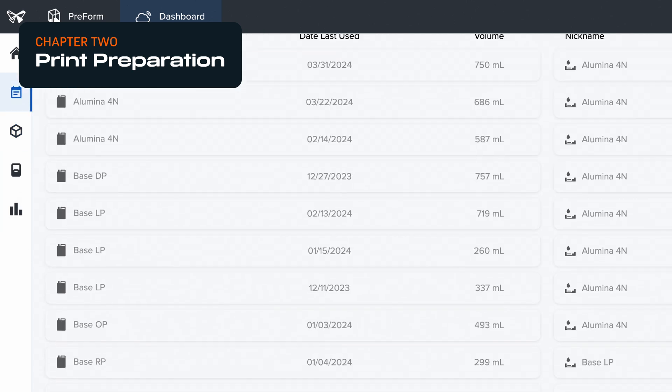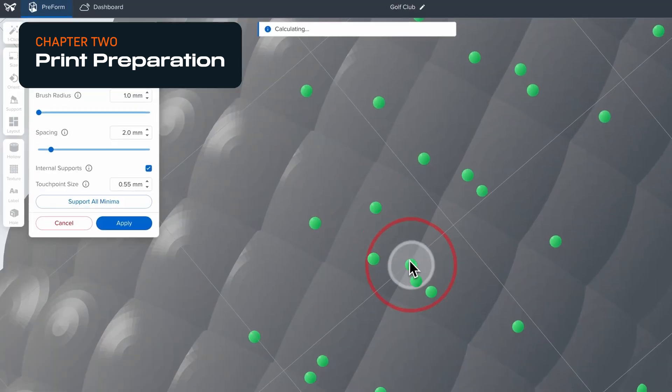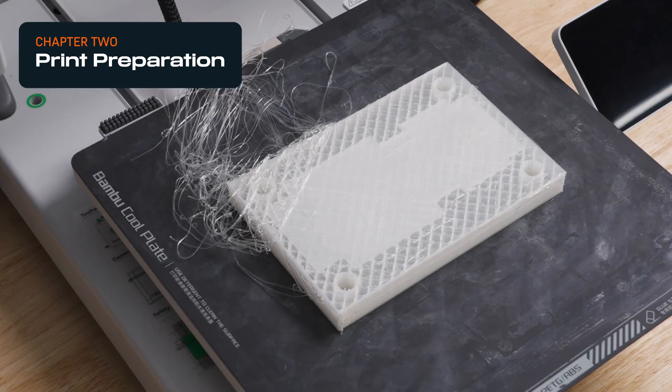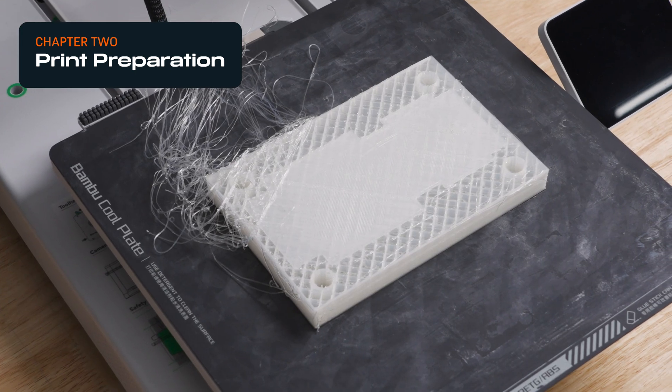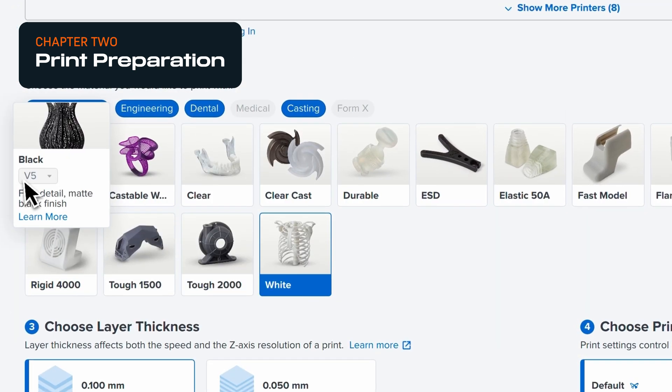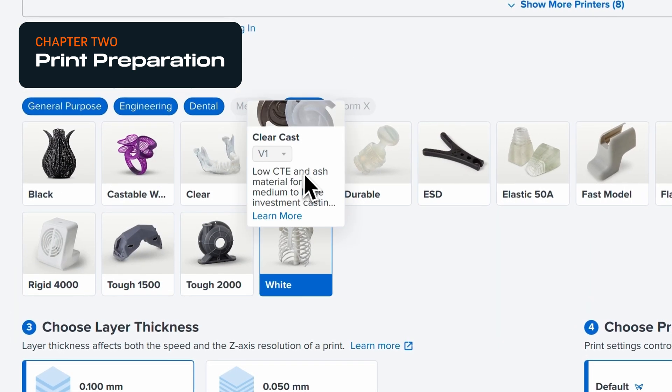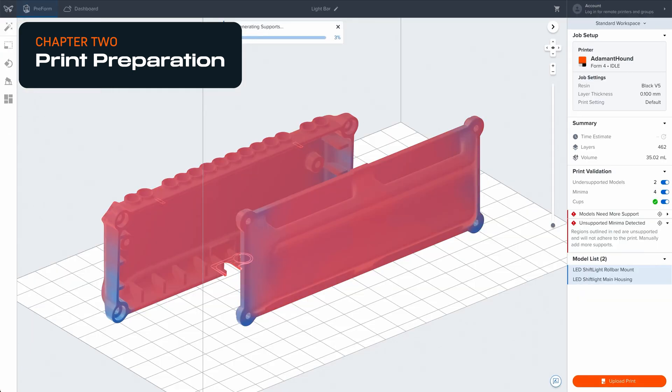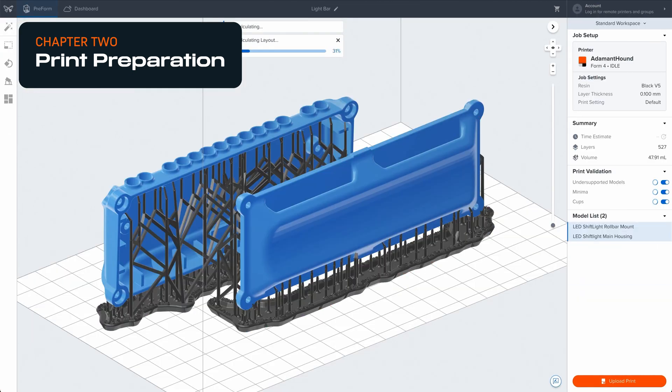Low-cost printers of each technology typically require the user to do more work on the front end, and this can lead to part failures or inefficiencies in the print process. Professional FDM, SLA, and SLS 3D printers often have the option of setting up your models automatically, relying on thoroughly tested settings and material tuning.